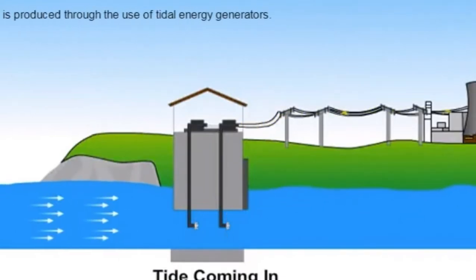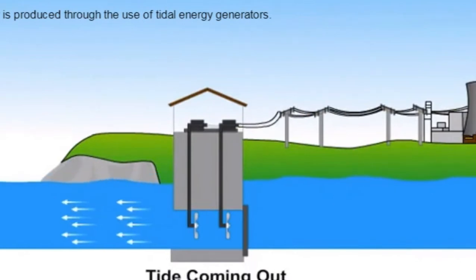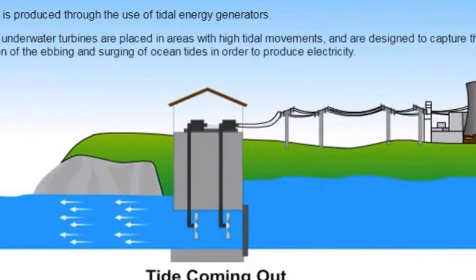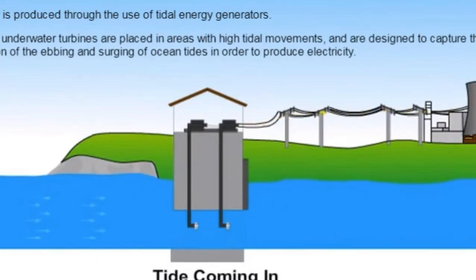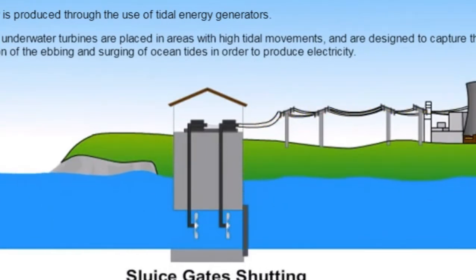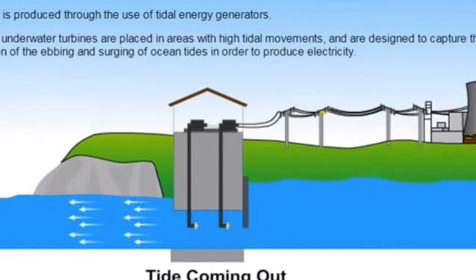Tidal energy is produced through the use of tidal energy generators. These large underwater turbines are placed in areas with high tidal movements and are designed to capture the kinetic motion of the ebbing and surging of the ocean tides in order to produce electricity.